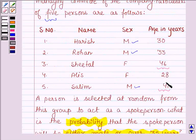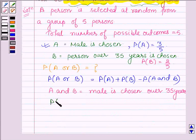Therefore, only one person is a male over 35 years. Therefore, probability of A and B is equal to the number of favorable outcomes, that is, 1 upon the total number of outcomes, that is, 5.